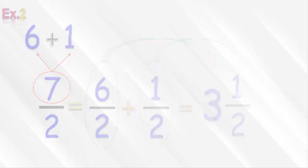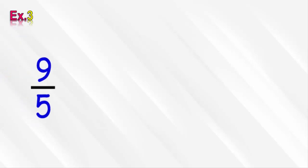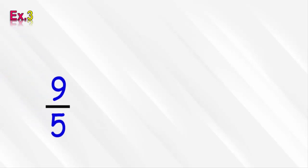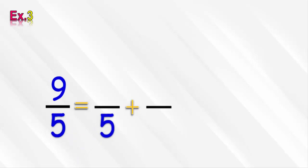Third example. In this example we will convert the fraction 9 over 5 into the form of a mixed number. As before, we start by writing the improper fraction in the form of a sum of 2 like-denominator fractions, like this.